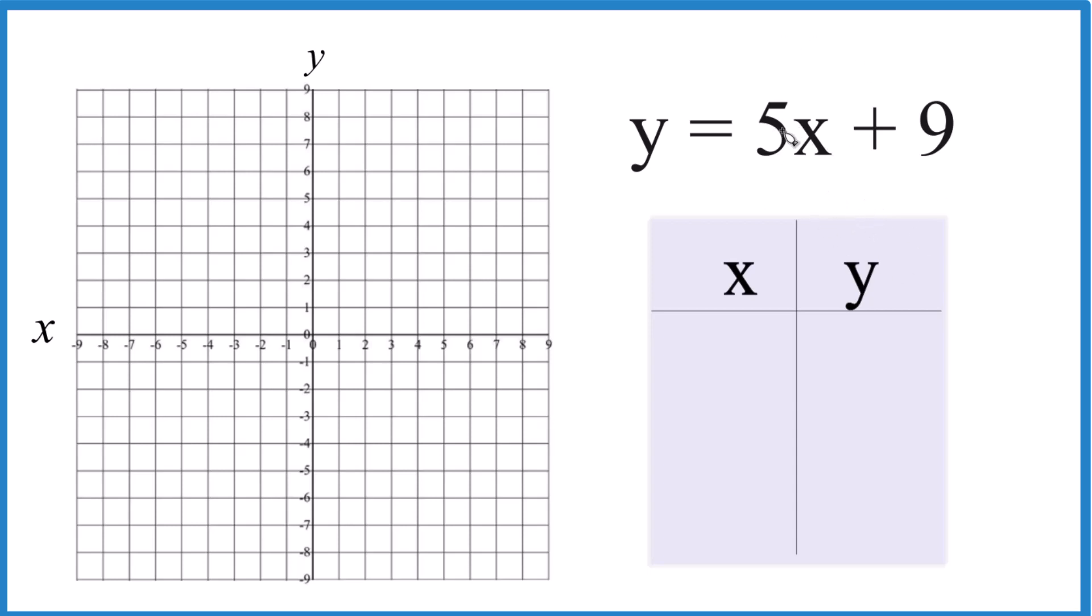So we'll put values in for x, get values for y, and then graph them. I always like to start out with 0 for x. So if x is 0, 5 times 0, that's 0, so we're left with 9 for y.